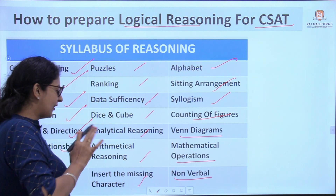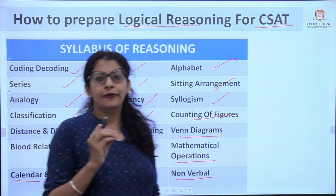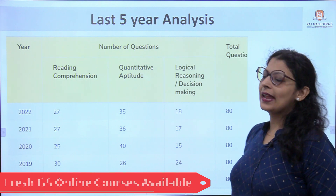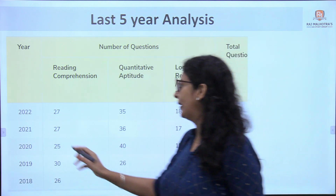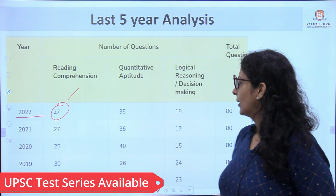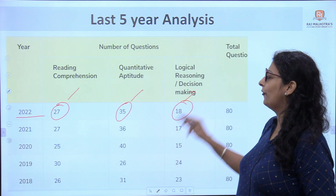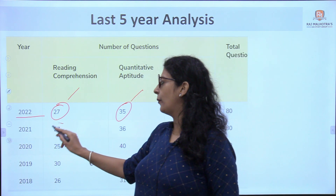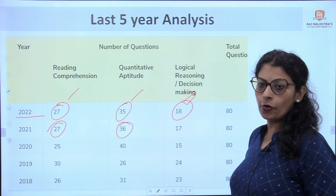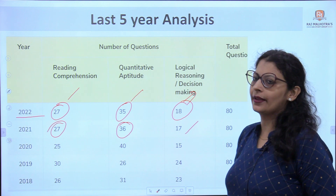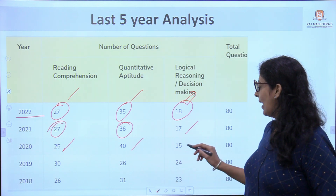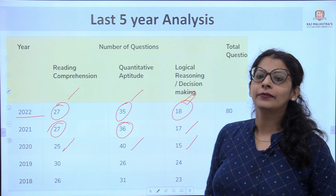Let's check the last five-year analysis to see how many questions of reasoning come in the CSAT exam. In 2022, out of 80 questions, 27 were of English, 35 were of quants, and 18 were of reasoning. In 2020, there were 25 questions of English, 40 questions of quants, and 15 questions from reasoning.